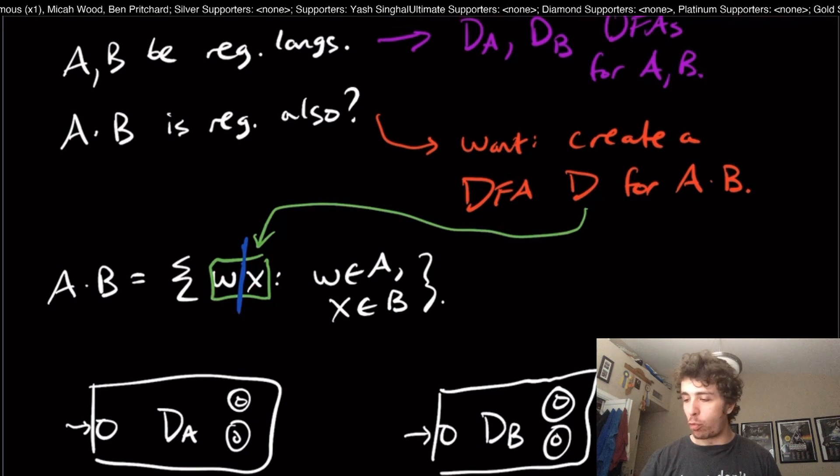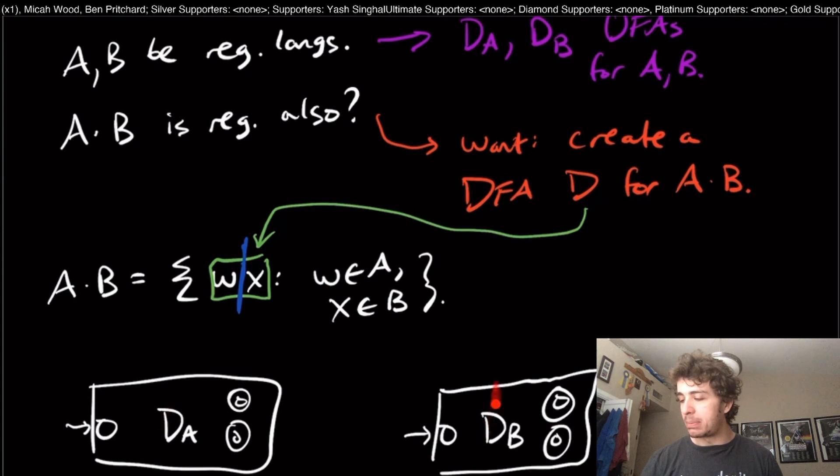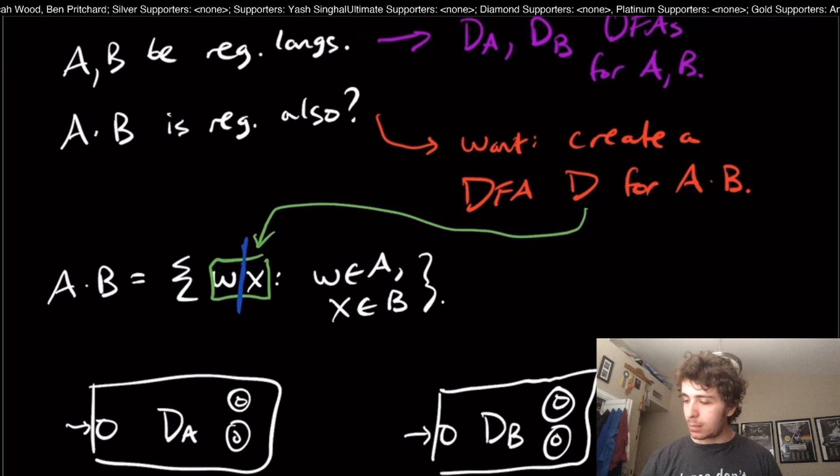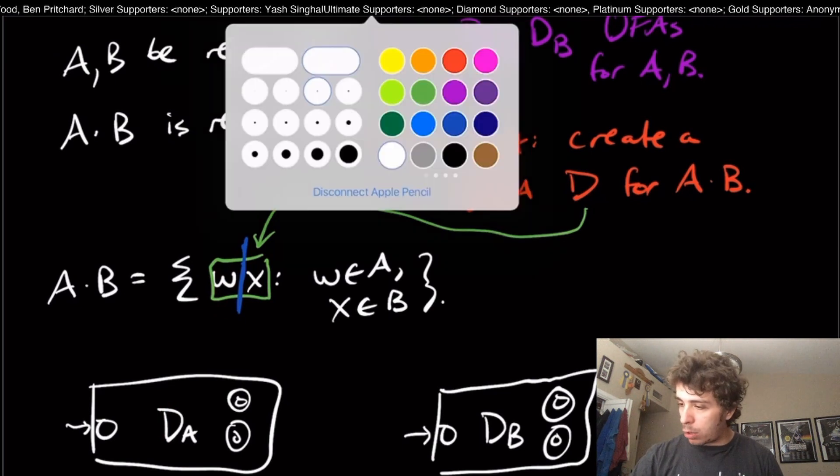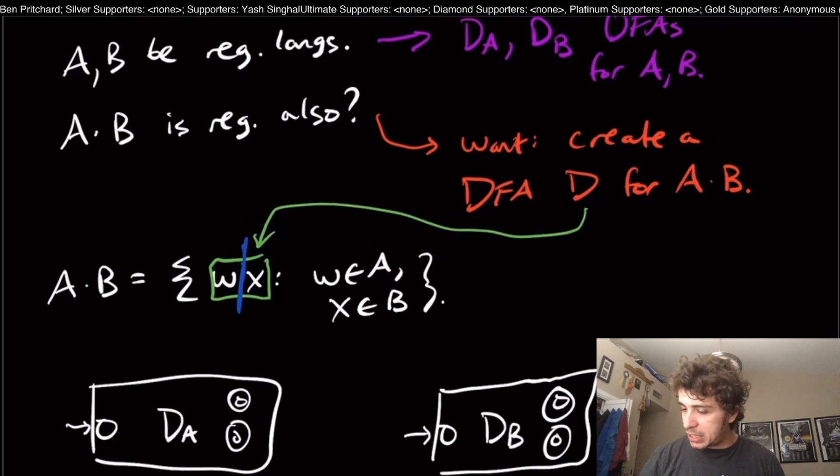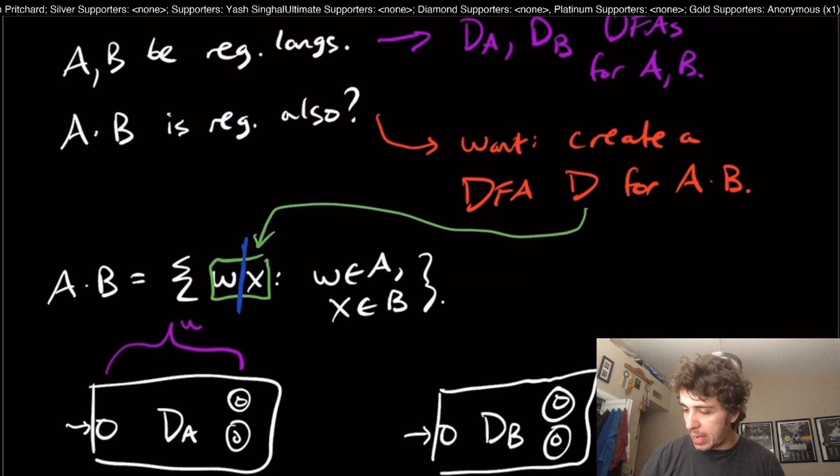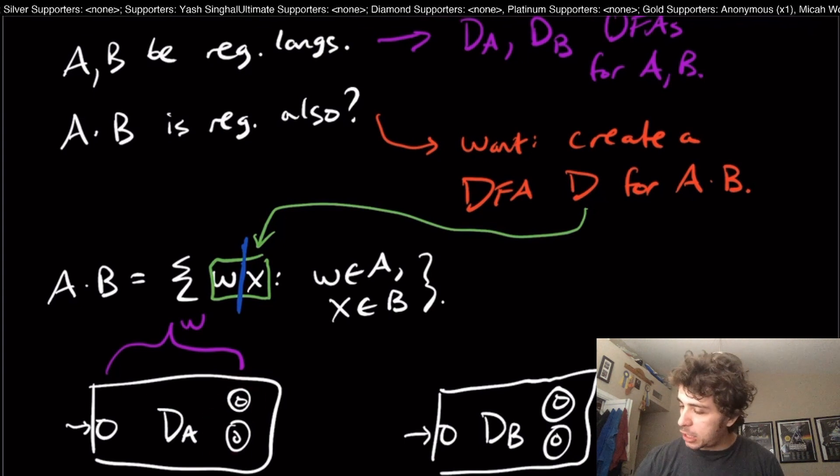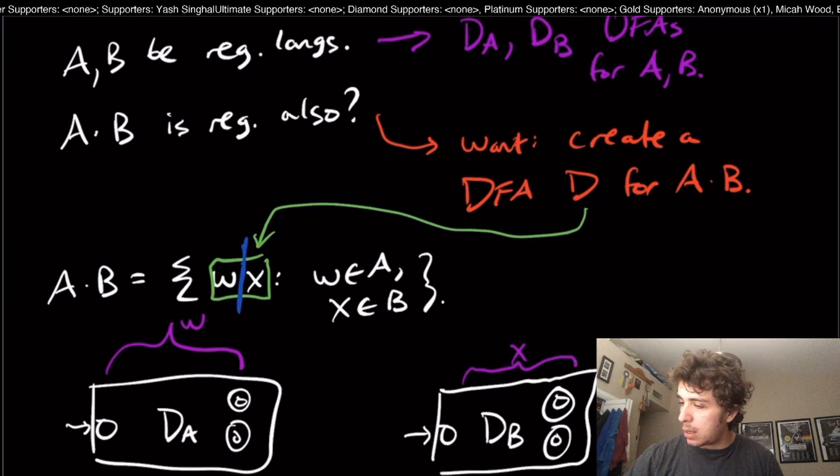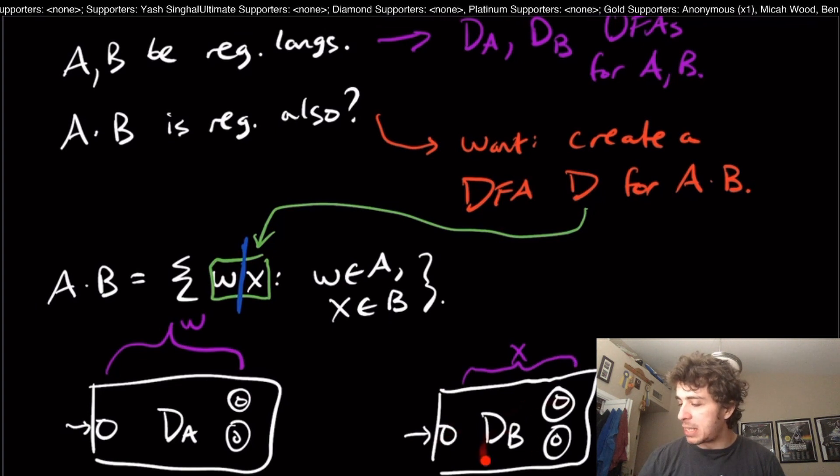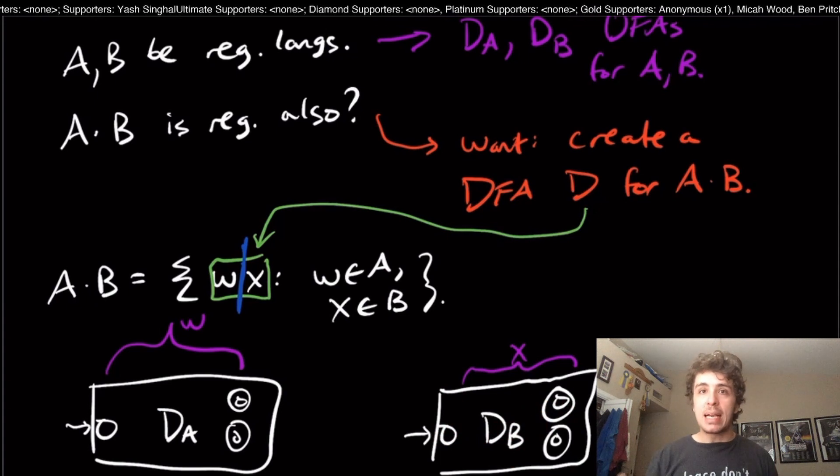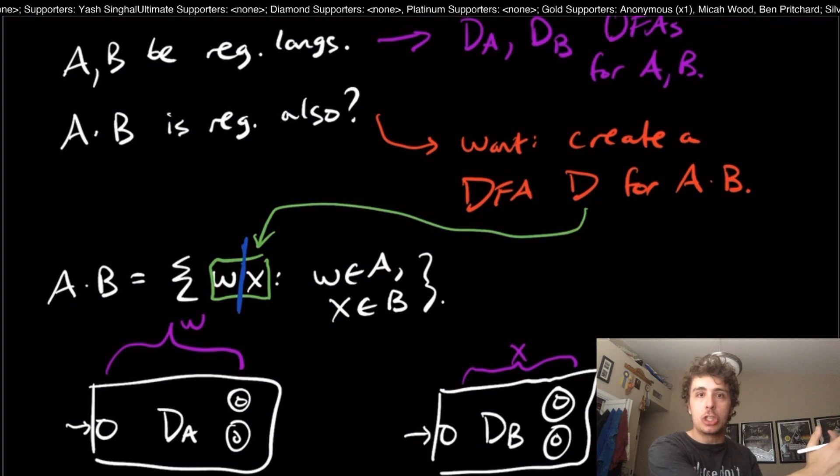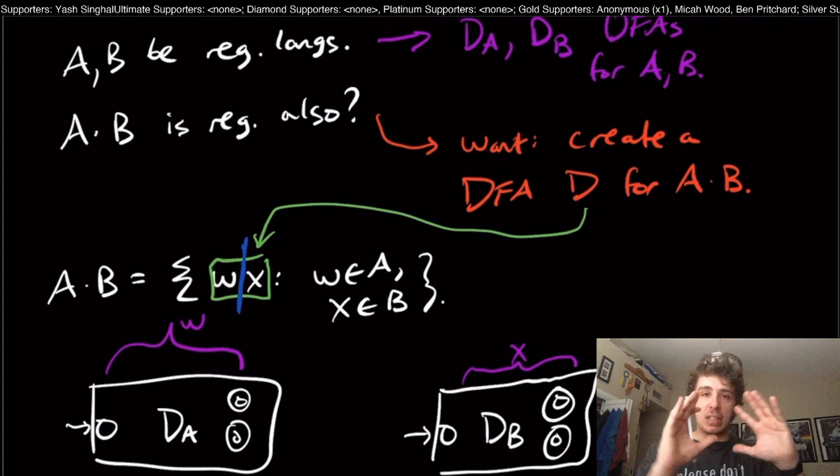Otherwise it wouldn't be in this concatenation language, because if one of the two pieces wasn't accepted by its corresponding DFA, then it wouldn't be in here in the first place. That means that the w part, whatever it is, has to be accepted in this part right here and must land in one of the final states, and the x part must be read through this DFA. But remember, we can't just read a part of the string and then switch to a completely different machine and then read the rest of it. We need to have a single machine to read the entire string all at once.